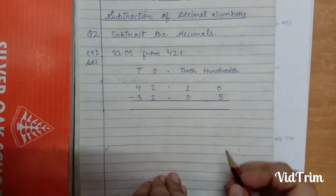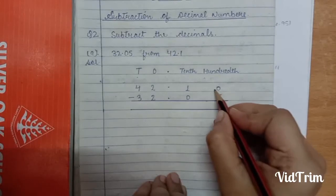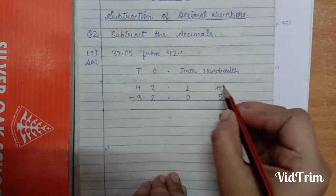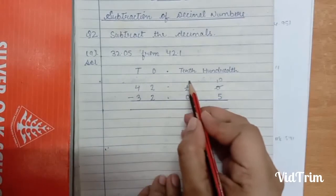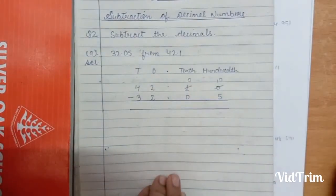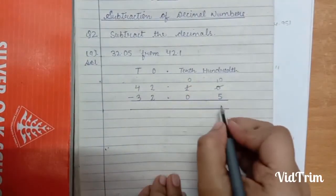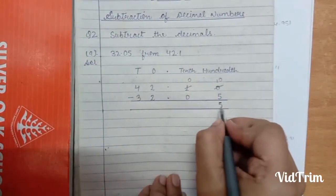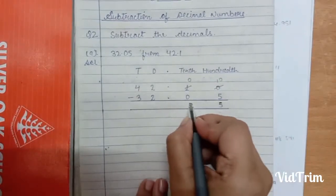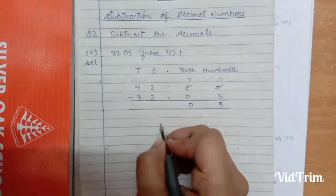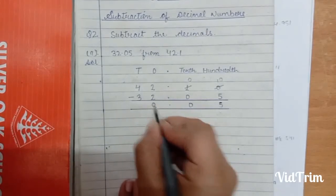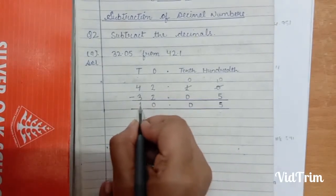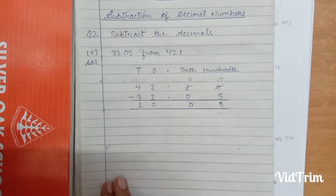Now we have to take a borrow in this subtraction. So 0 becomes 10 and 1 becomes 0. So 10 minus 5 is 5, 0 minus 0 is 0, decimal under decimal. Now 2 minus 2 is 0 and 4 minus 3 is 1. So our answer is 10.05.